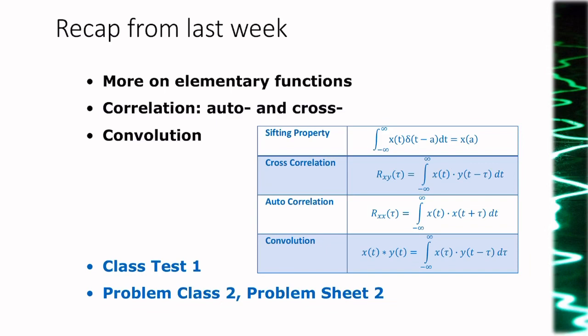A quick recap: when we spoke about elementary functions, both last week and the week before, we introduced correlation, autocorrelation, and cross-correlation — how and why they're used. We spoke about convolution and how it's going to be really important throughout this module. We introduced the sifting property of the Dirac delta function and solved a lot of problems about that in problem sheet two. You've already had class test one and received some feedback. So now we need to learn new things, build up our knowledge, practice, answer questions, and prepare for the next class test on the 2nd of November.